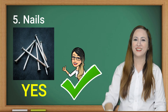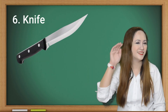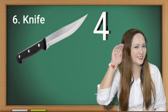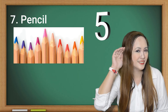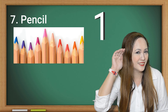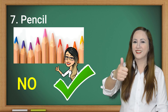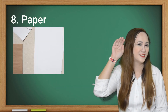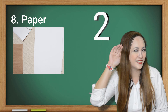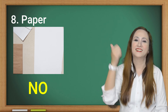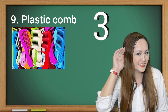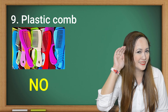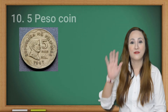Number six: nails. Correct! Number seven: pencil. Correct! Number eight: paper. Correct! Number nine: plastic coat. Correct! Number ten: 5-peso coin. Correct!